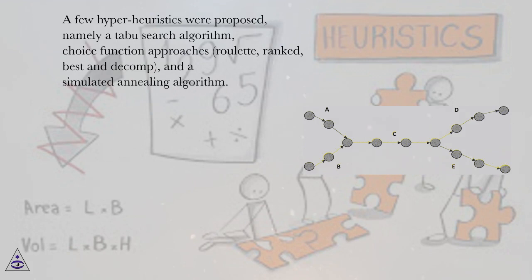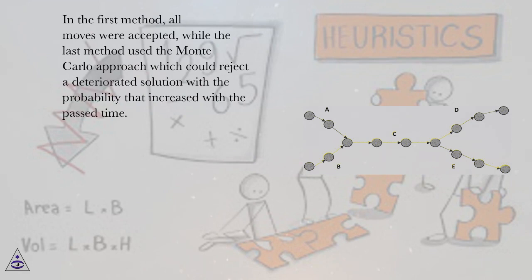In the first method, all moves were accepted, while the last method used the Monte Carlo approach which could reject the deteriorated solution with the probability that increased with the past time.